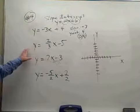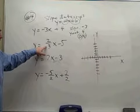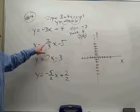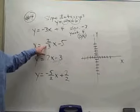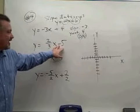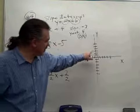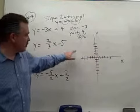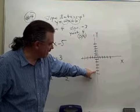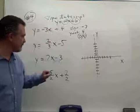This equation is also in slope-intercept form, so immediately the coefficient of x is the slope. The slope of this line would be two-thirds. The y-intercept would be negative five, meaning the line crosses the y-axis down here at the point (0, -5).